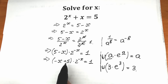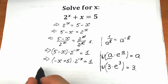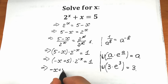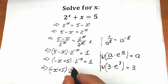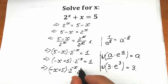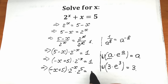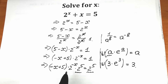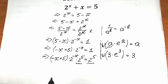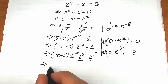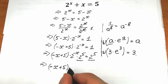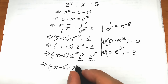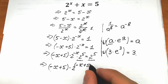Now let's try to create this Lambert W form on the left side. We have minus x plus 5 — let's try to create the same power. First, let's multiply both sides by 2 to the power 5. So we have minus x plus 5 times 2 to the power minus x, multiplied by 2 to the power 5 on the left, and 1 times 2 to the power 5 equals 32 on the right. Since we have the same base, we can add the powers, giving us minus x plus 5 times 2 to the power minus x plus 5, equal to 32.